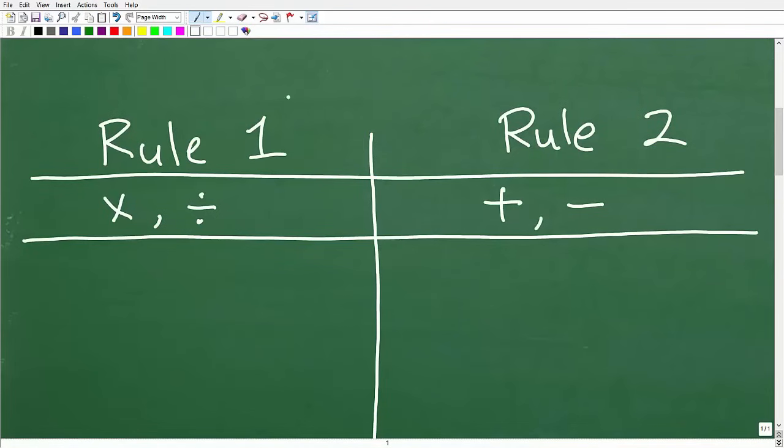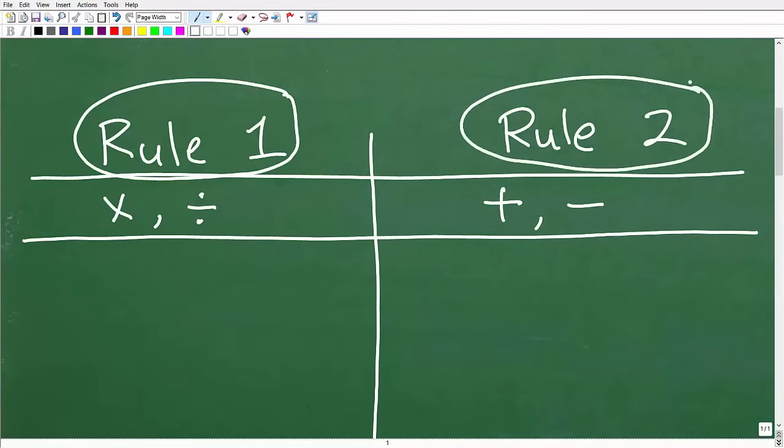All right, so here we have Rule 1, and then we've got this other rule over here, Rule 2. Let's go ahead and start with Rule 1. So Rule 1 will cover positive and negative numbers when we have multiplication or division going on.